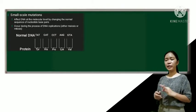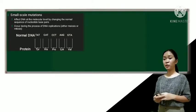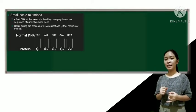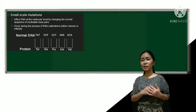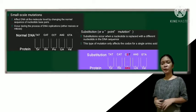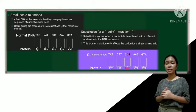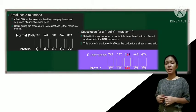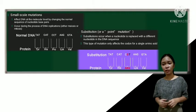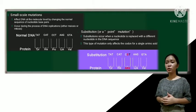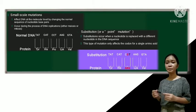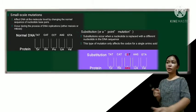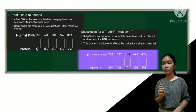So there are three possible types of small-scale mutations. We have the substitution, deletion, and insertion. Okay, so first we have the substitution. Substitution occurs when a nucleotide is replaced with a different nucleotide in the DNA sequence. So this is also referred to as a point mutation. So the most common substitution involved is the switching of adenine and guanine, or A and G, or C to T.